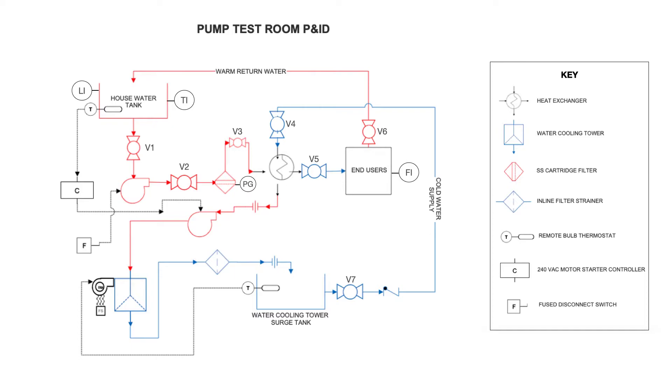You'll see that there is a remote bulb thermostat in the water cooling tower surge tank and in the house water tank. We can also see that there is a 240 volt motor starter controller that controls the water pump that pumps water out to the water cooling tower. You see there's a fuse disconnect switch that controls the pump that pumps the water out to the end users in the pump test room.